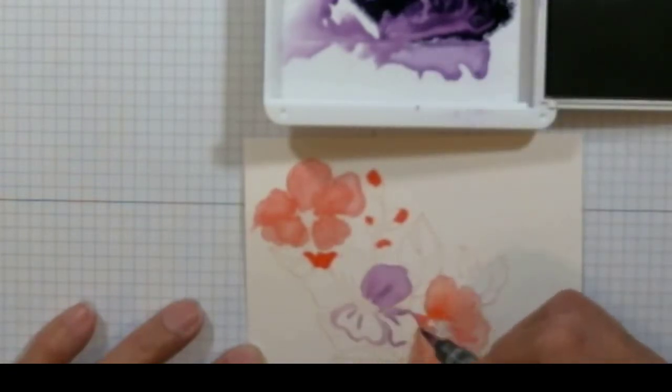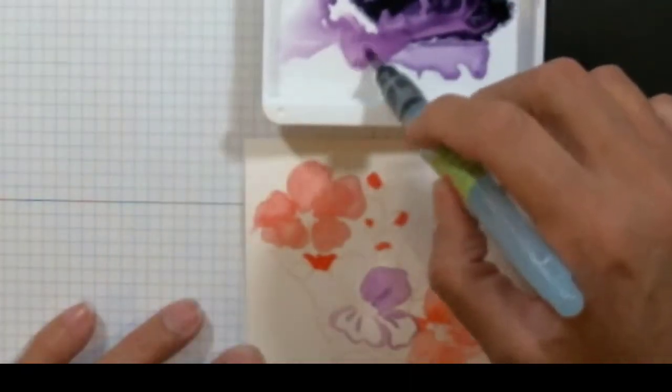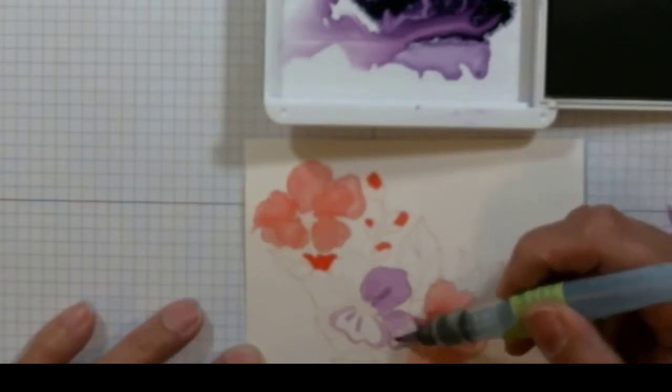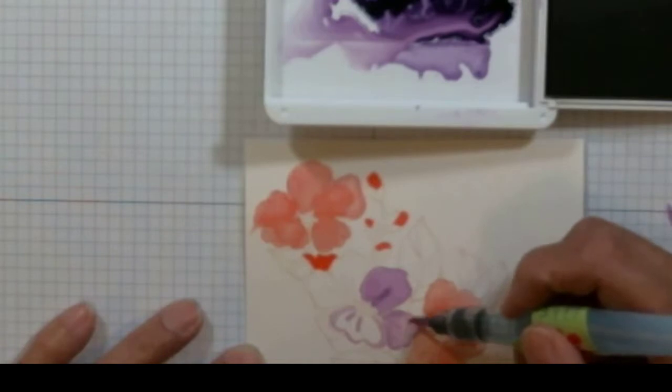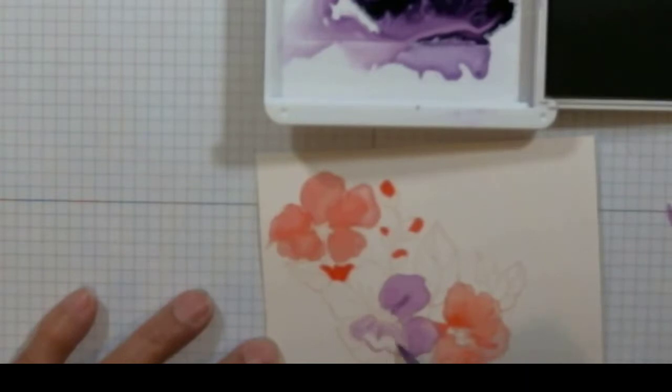You can build your color and work on the flower. When it's dry, come back to it and add a little bit more. You can squeeze water right from your aqua painter onto your paper too, and it'll just push the color out. The more you play with it, the more you're going to find that it's more fun to do.